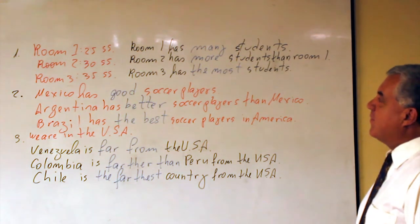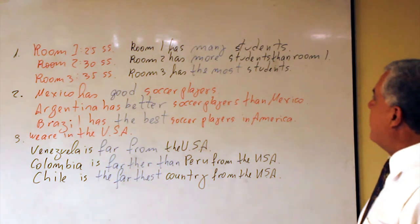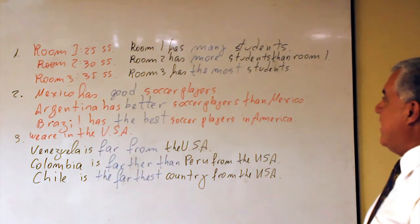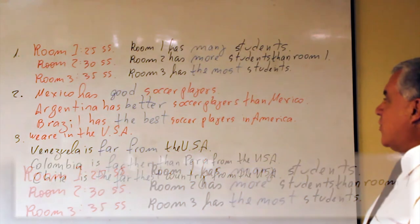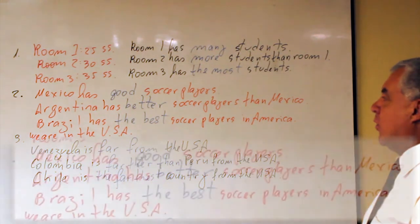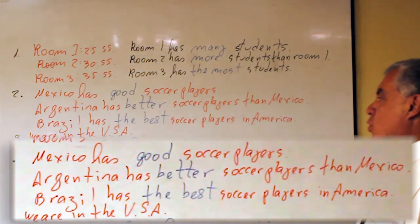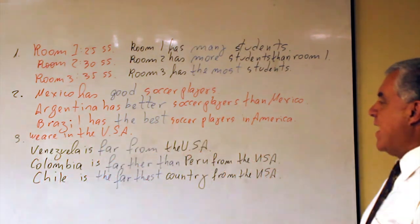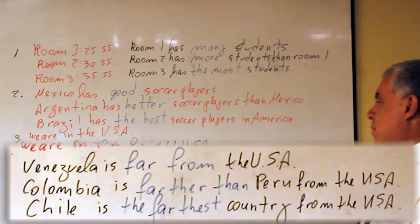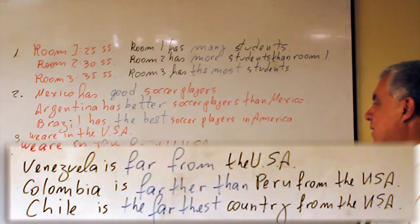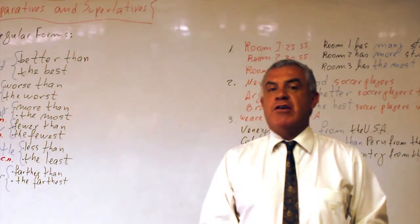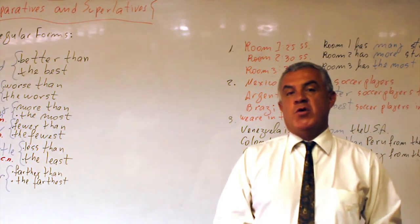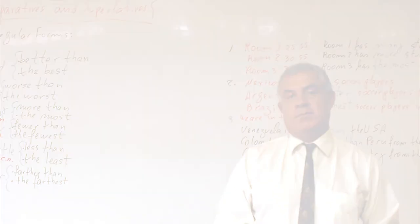Ok. As we can see, they have different forms. Many: comparative is more, superlative is the most. The same. Good: comparative is better, superlative is the best. Now, far. Thank you very much for watching this video. Good luck, and see you soon. Bye.